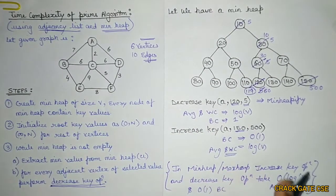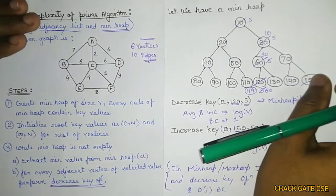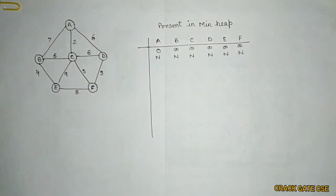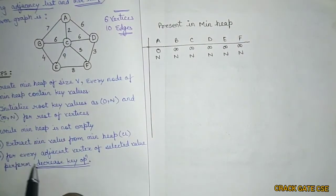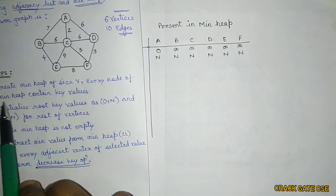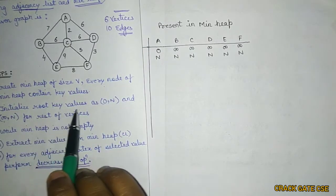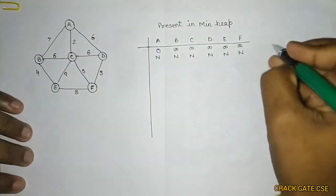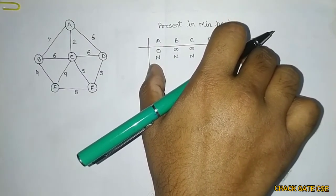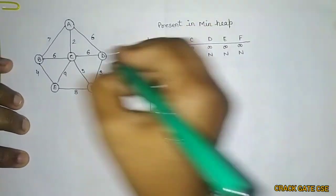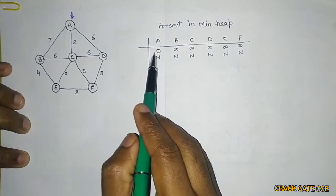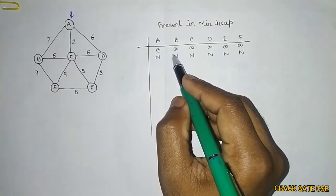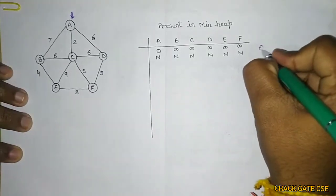Now let's find the time complexity using this particular example. These are the steps: first, create a min heap of size V. Every node contains key values. Initialize the root key value as 0, null, and infinite, null for the rest. I built a min heap and initialized these values, taking vertex A as root with key 0 and parent null. For B, the minimum value is initialized as infinite with parent null. This step takes O(V) time.